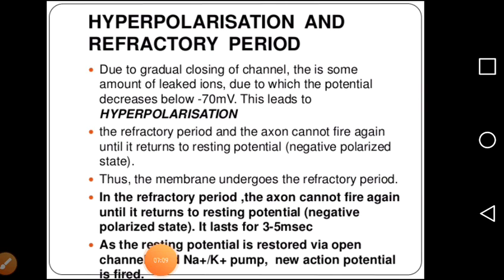The refractory period is the period in which the axon cannot fire again until it returns to its resting potential. If the axon keeps firing without a proper pattern, it would get exhausted. So there is a refractory period in which axons do not fire until the potential comes back to resting potential. It normally lasts for 3 to 5 milliseconds.